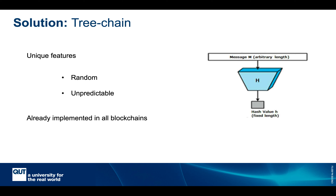In Tree-Chain we use hash functions for these patterns. As everyone likely knows, a hash function receives an input of any size and outputs a fixed-size string. The output is random — even changing one bit of the input completely randomizes the output — and it is unpredictable, so you cannot predict the hash of a particular message. Hash functions are already implemented in all existing blockchains, so we are not introducing anything new.